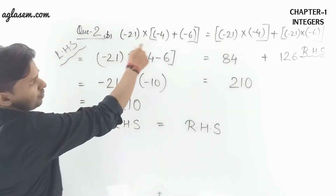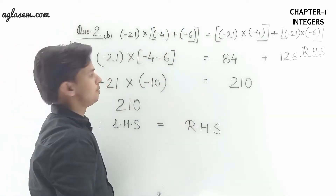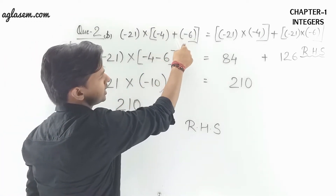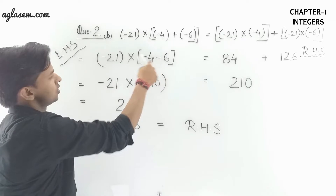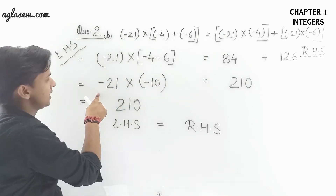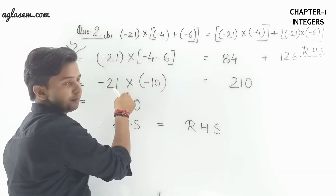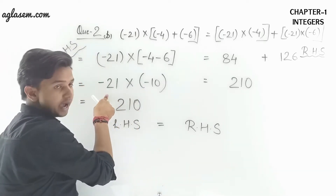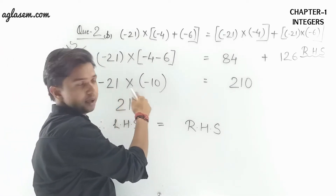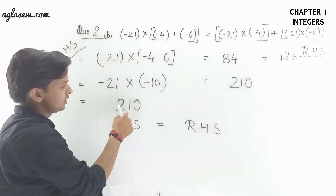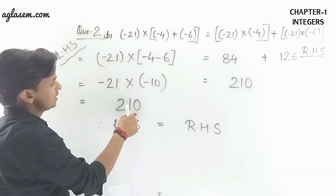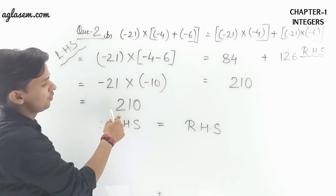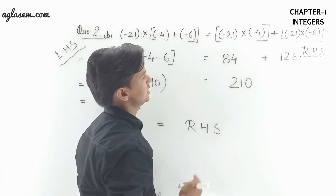For the left hand side, we solve the bracket first using BODMAS: -4 + (-6) = -4 - 6 = -10. So (-21) × (-10): minus times minus makes plus, giving us 210. This was the left hand side.